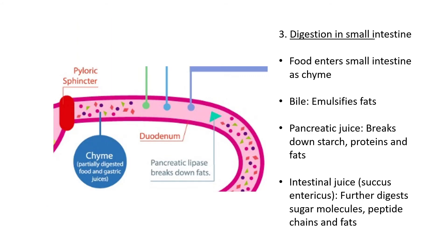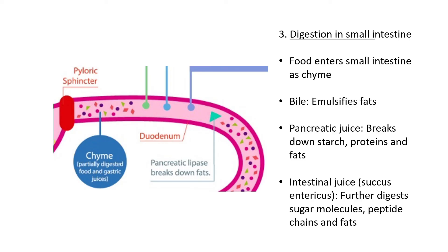After stomach digestion, food passes through the pyloric sphincter into the small intestine. The pyloric sphincter acts like a valve — it closes while food is being digested in the stomach and only opens when food is ready to move into the small intestine, ensuring gastric juices don't escape. Food that has been partially or mostly digested enters the small intestine as chyme — no longer called a bolus — and it carries some gastric juices that continue digesting.